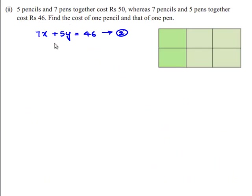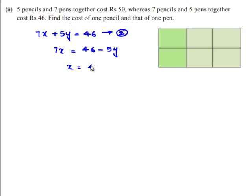The second equation is 7x plus 5y equals 46. This can be written as x equals (46 minus 5y) divided by 7.